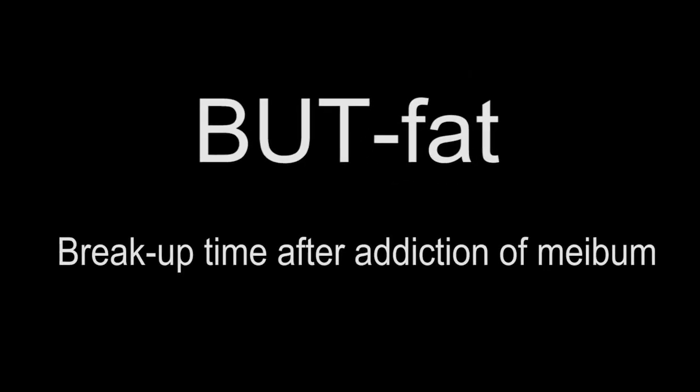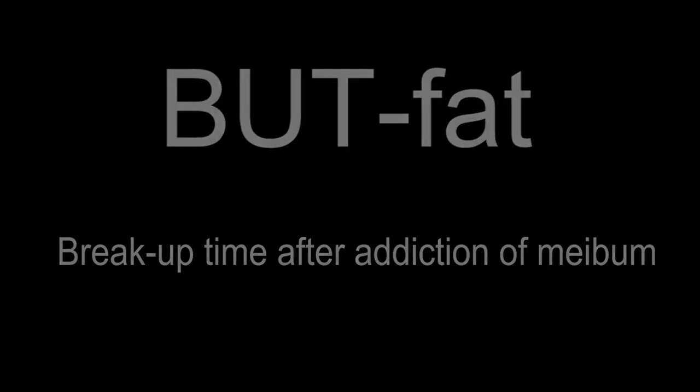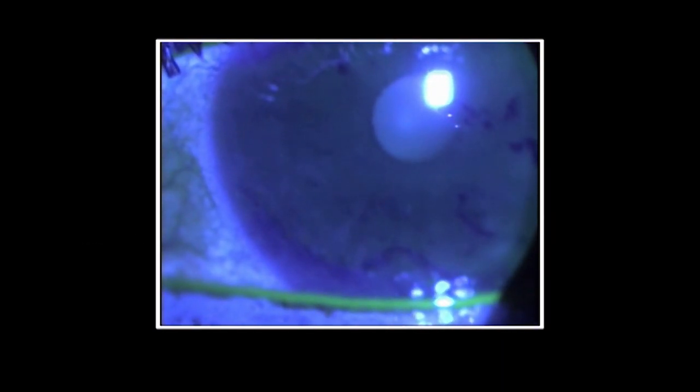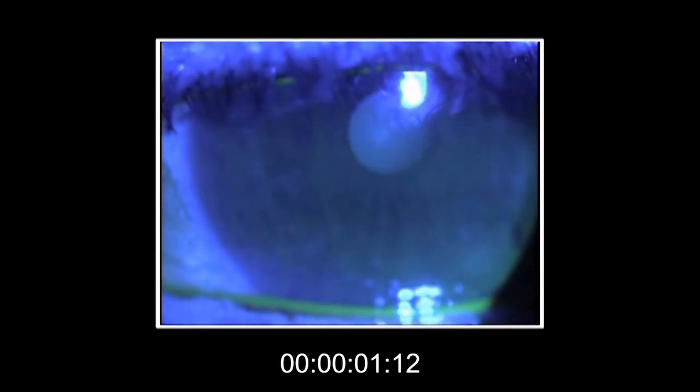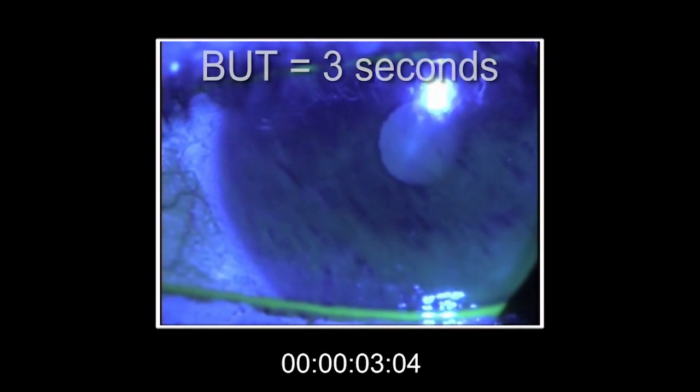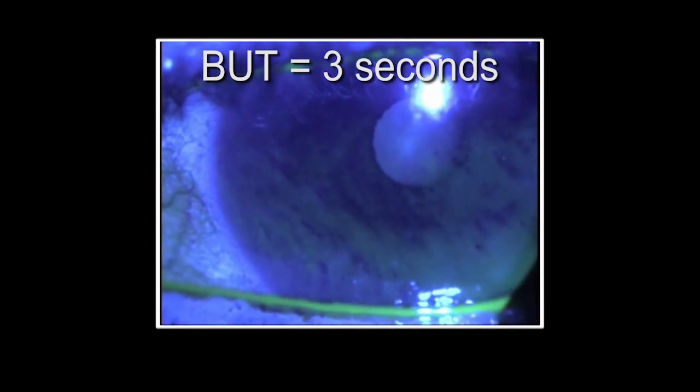The Breakup Time Fat is an adaptation of the traditional Breakup Time plus the interference by the addition of fats coming from the meibomian glands. Traditional Breakup Time is carried out by counting the seconds until the rupture of the tear film. Next, squeeze some of the meibomian glands and then observe the arrival of lipid material on the lacrimal surface.